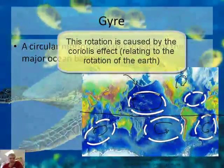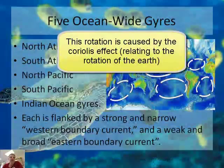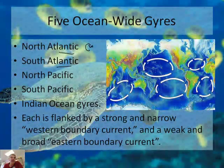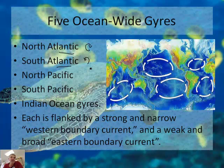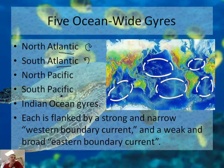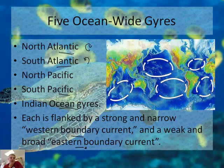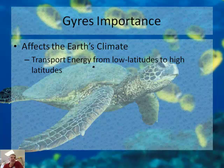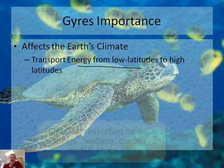That, of course, is because of the Coriolis effect that we learned about in a previous podcast. We have five ocean-wide gyres: one in the North Atlantic and the South Atlantic — clockwise and counterclockwise respectively — and North Pacific and South Pacific and in the Indian Ocean. Each is flanked by a strong and narrow western boundary current and a weak eastern boundary current. This totally affects the Earth's climate — it transports energy from the low latitudes to the high latitudes.